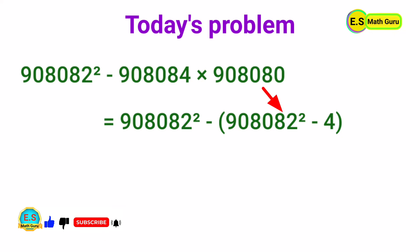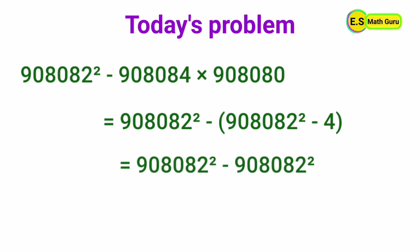Let us remove the brackets by multiplying the negative sign with 908,082 squared and minus 4. Then we get 908,082 squared minus 908,082 squared plus 4.